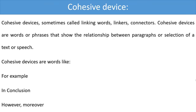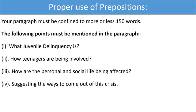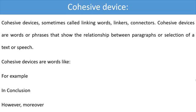Now come to another term: cohesive device. This may not be a familiar term, but you know these devices. Cohesive devices are sometimes called linking words. These linking words, linkers, or connectors are words or phrases that show the relationship between paragraphs or sections of a text or speech. Cohesive devices are words like 'for example,' 'in conclusion,' 'however,' 'moreover,' and 'so.' Dear girls, I hope you can now understand what cohesive devices are.